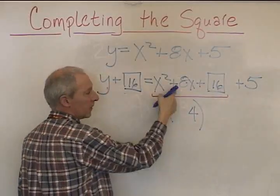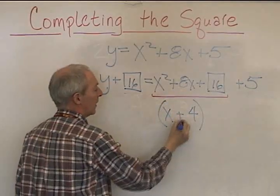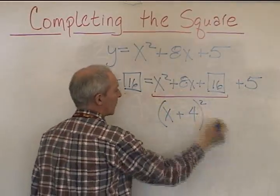We have the x here. This is positive, so this is a positive inside the binomial. And it's all squared.